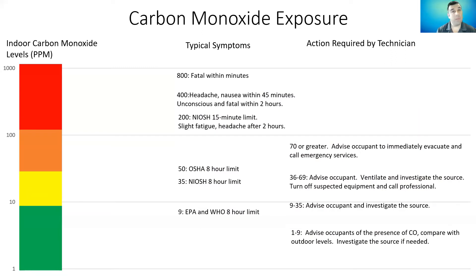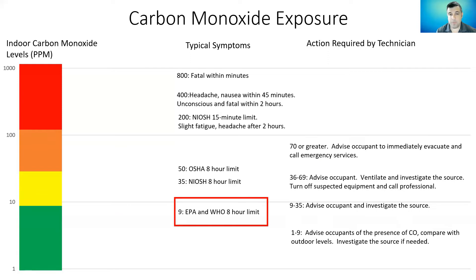At what levels is carbon monoxide unsafe? Carbon monoxide is measured in parts per million, and even by that term we can already see that it probably doesn't take a very high concentration to be unsafe. I always carry a personal carbon monoxide detector — a monitor clipped to my belt — and I monitor that as I'm walking through a space. At levels of one to nine parts per million, we're within the EPA and World Health Organization eight-hour limit, but really anything above zero should get our attention.